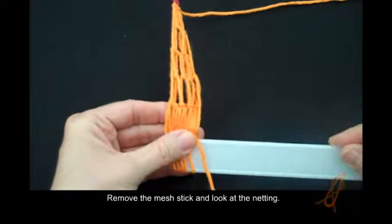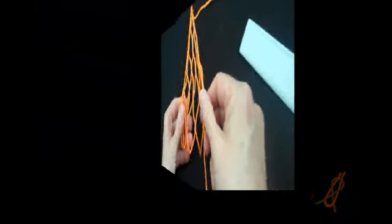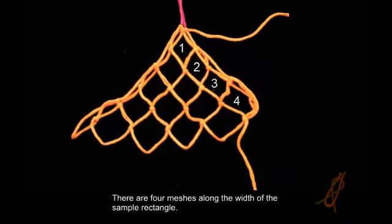Remove the mesh stick and look at the netting. There are four meshes along the width of the sample rectangle.